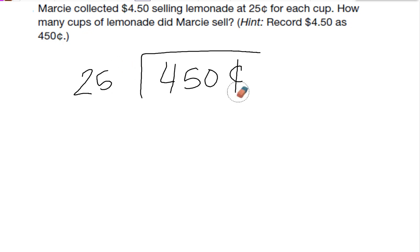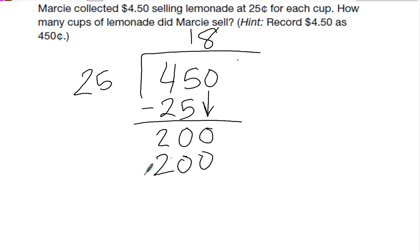It helps to get rid of the cent signs when we do this. 25 goes into 45 one time. That's 25. I subtract it, get 20. Bring down the zero. 25 goes into 200 eight times. 8 times 25 is 200. So she sold 18 cups of lemonade to make her $4.50.